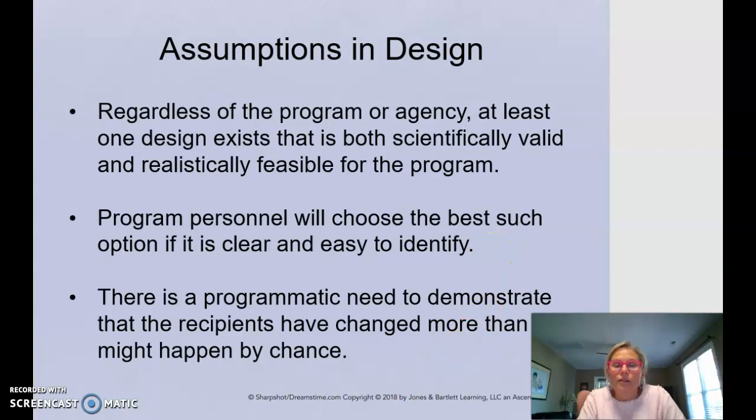Program personnel will choose the best such option if it is clear and easy to identify. So it's very important that the people that are involved in the program understand their choices and then can make the one that best fits for their program. Always remembering that there is a programmatic need to demonstrate the recipients have changed more than might happen simply by chance. So you all have learned this concept in your statistics classes. It's reinforced in these final chapters of the book about chance versus statistical significance.